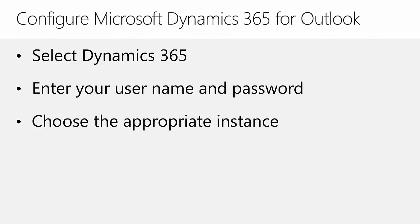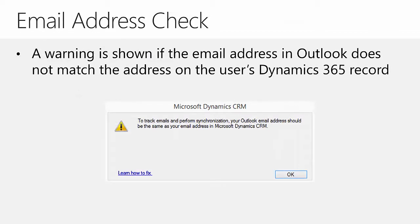The configuration of the Dynamics 365 for Outlook client is very simple and requires three steps. First, the user selects Dynamics 365 instead of providing a URL. Then the user enters their credentials, and finally selects the appropriate instance to complete the configuration process. In order for the user to track emails, appointments, contacts, and tasks from Microsoft Outlook to Dynamics 365, the email address on their Dynamics 365 user account must match the email address being used in Microsoft Outlook. If this is not the case, an error will be displayed and tracking will not work until the email addresses match.